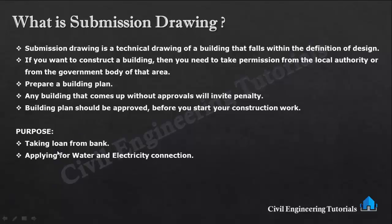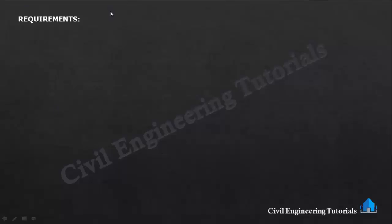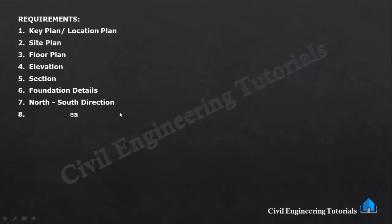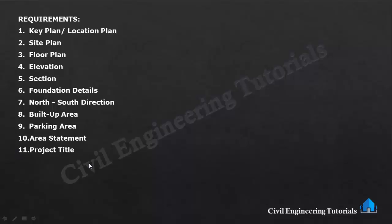Now, what are the requirements in a building plan for submission? First is the key plan, which is also known as the location plan. Next: site plan, floor plan, minimum one elevation, minimum one section, foundation details, north-south direction, built-up area, parking area, area statement, and project title. These are the important requirements in a building plan for submission.